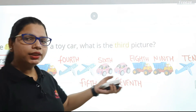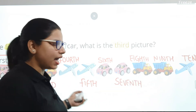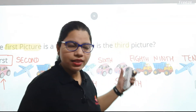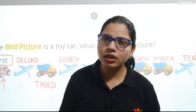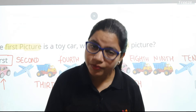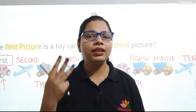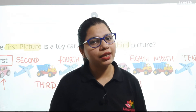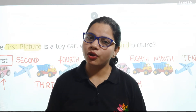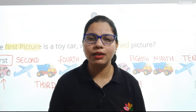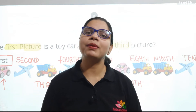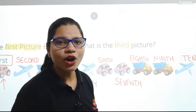These are our ordinal numbers: first, second, third, fourth, fifth, sixth, seventh, eighth, ninth, tenth. Just as we use counting numbers one, two, three, four — similarly, in ordinal numbers we use first in place of one, second in place of two, third in place of three, fourth in place of four, fifth in place of five, sixth in place of six, seventh in place of seven, eighth in place of eight, ninth in place of nine, and tenth in place of ten.